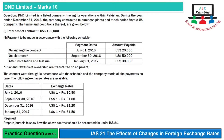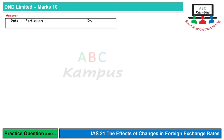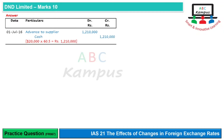Sabse pehle hume dekhna hoga ki jab humne first payment ki aur jab contract sign hua, us din ki position kya hai - that is July 1, 2016. $20,000 humne pay kiye hain. July 1, 2016 ka jo rate hai, that is 60.5. To answer mein hum general entries ka format bana lenge. July 1, 2016 ko $20,000 ki payment, rate 60.5 hai, that is Rs. 12,10,000. Itne se hum advance to supplier ko debit karenge aur cash ya bank account ko credit karenge.